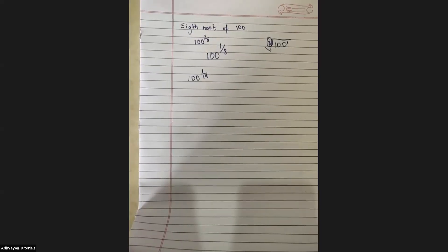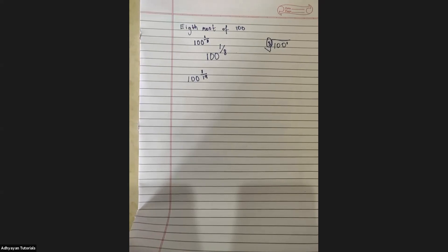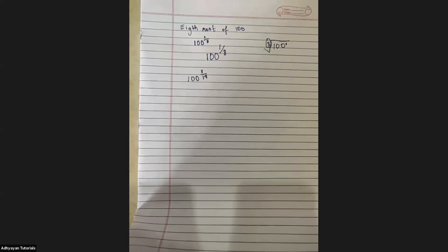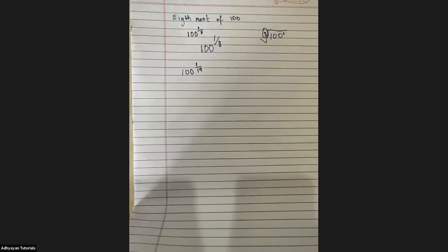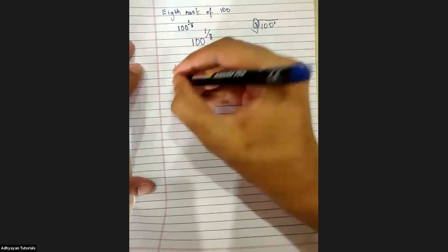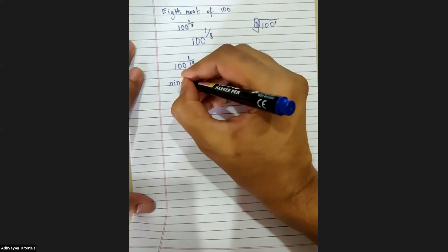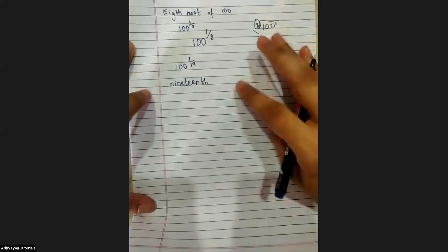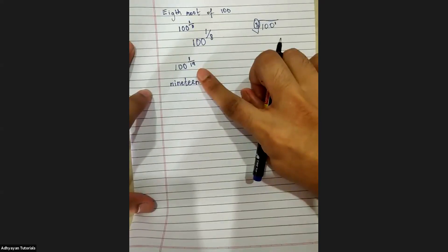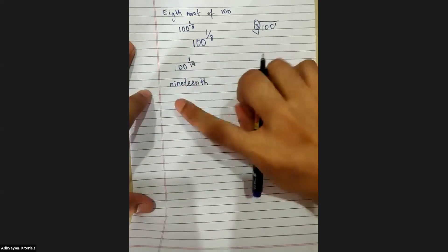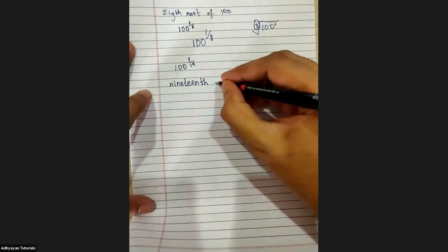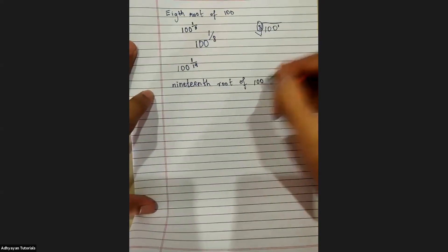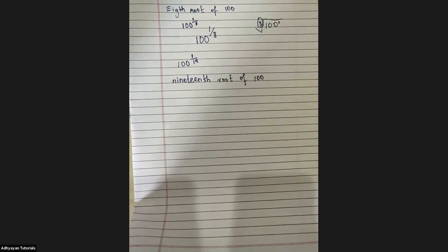Ramandeep, not the correct answer. Atherv, correct. The way we'll write it is 19th. It is not 9th root of 100 — that is wrong. It is 19th root of 100.